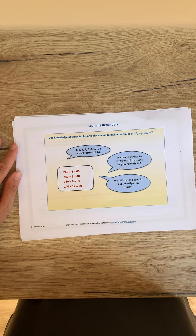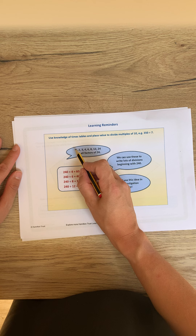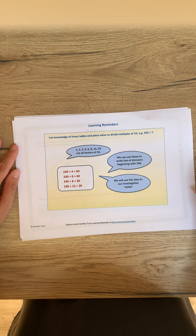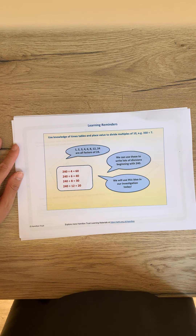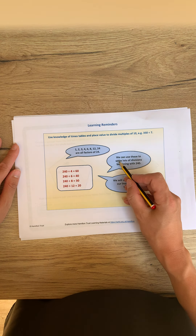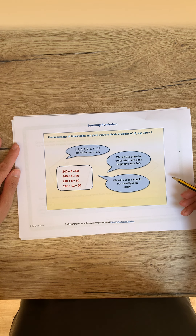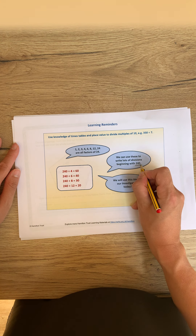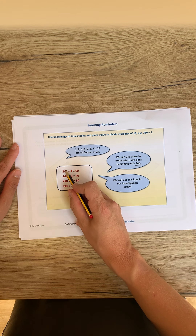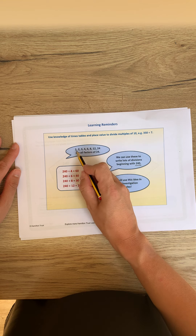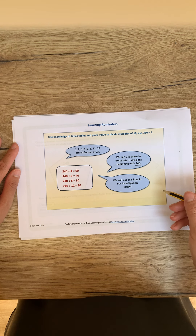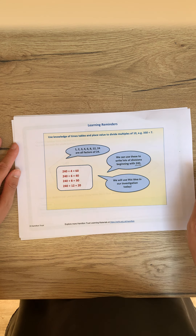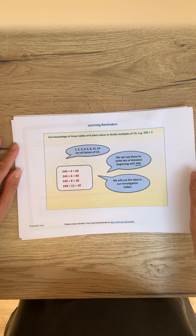Next, looking at factors. Here is listed all of the factors for 24. Just remember that a factor is anything that can be divided by a number and gives a whole number — 1 and the number itself are always factors. We can use these factors to write lots of divisions beginning with our starting number 240. We're going to be using this idea in the investigation today, so make sure you're using the idea of factors to help you.